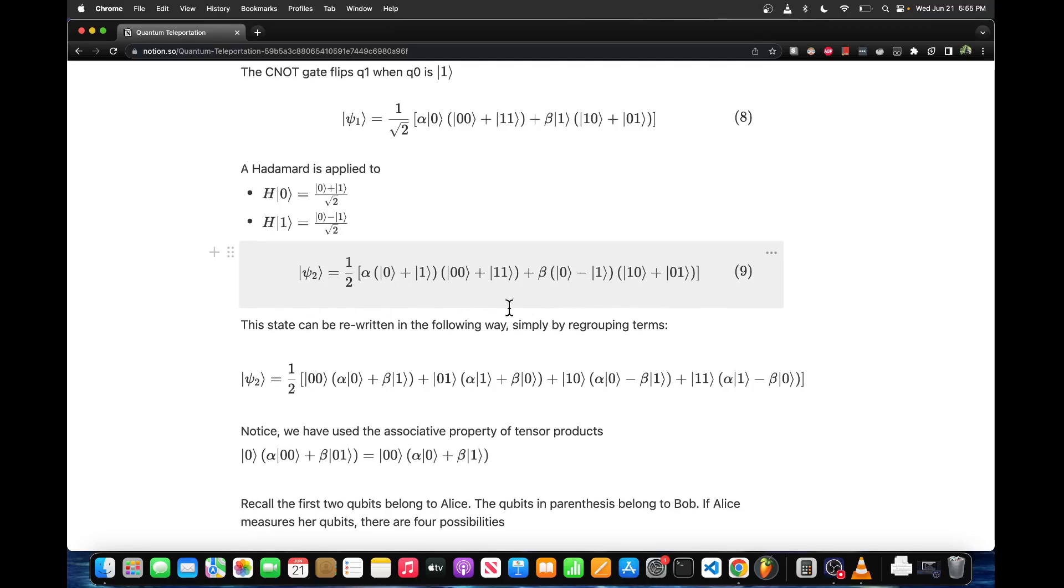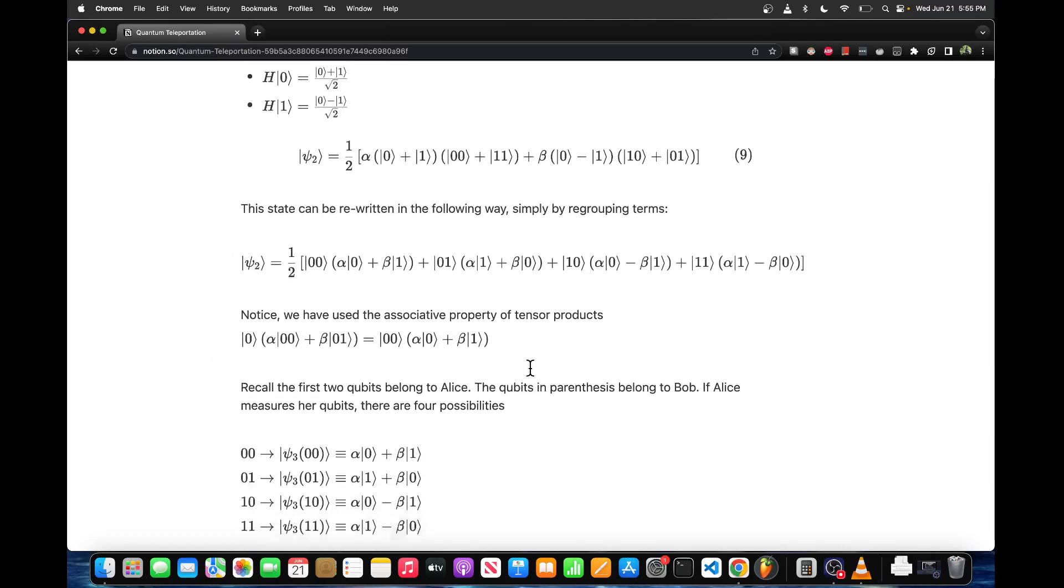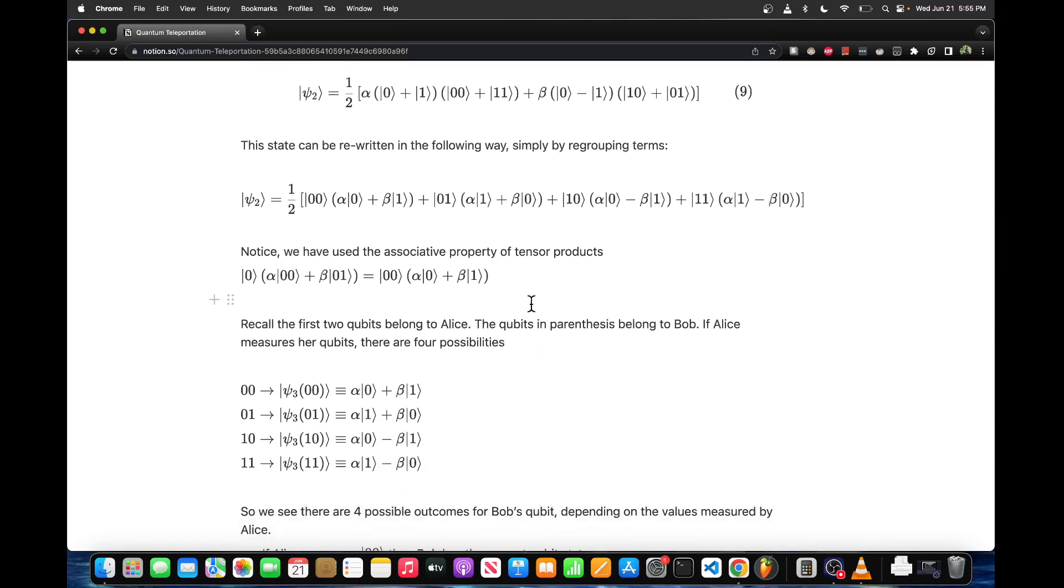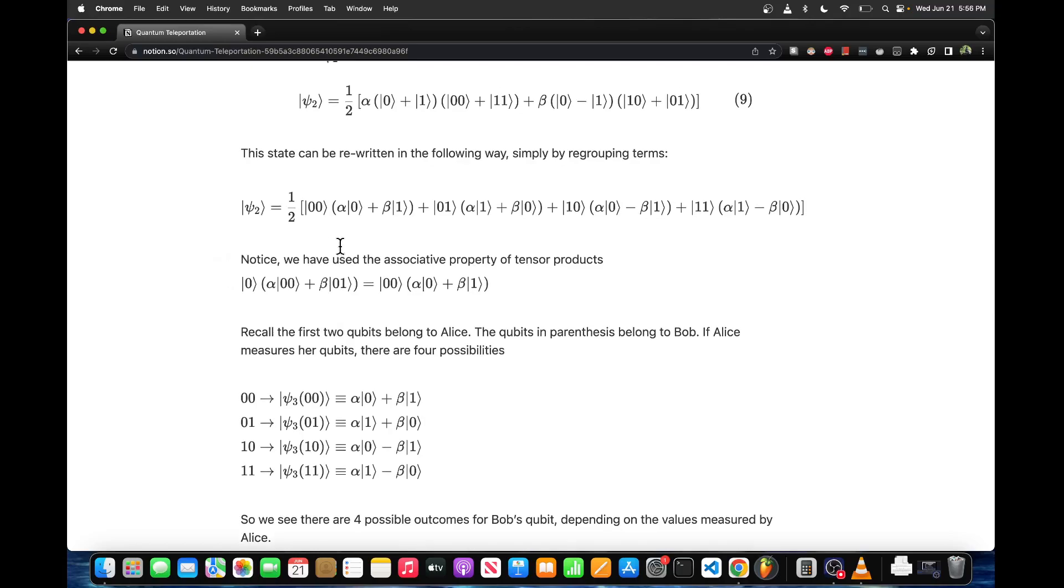We can rearrange these terms to get a little bit more clear idea of what's going on. Basically what I did was I pulled out Alice's qubits out in front and left Bob's qubit in parentheses, so that's how they're factored.